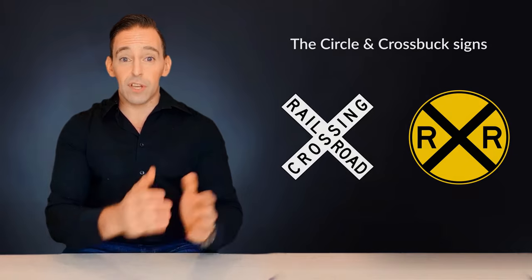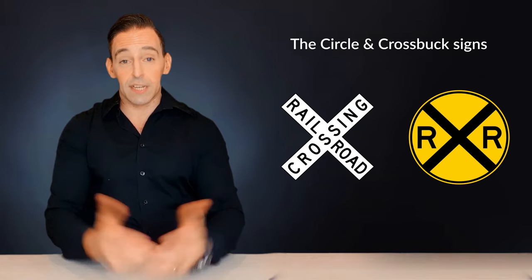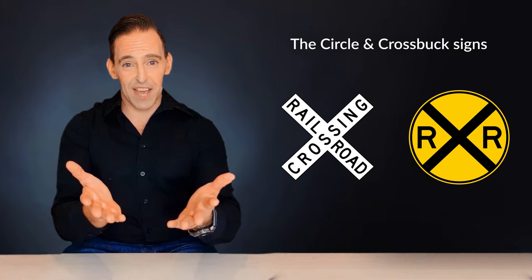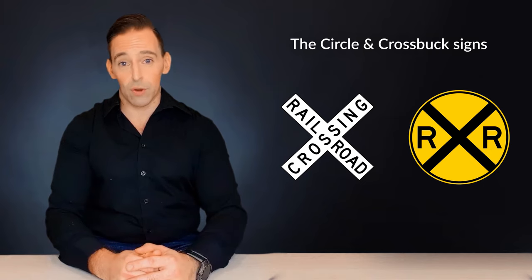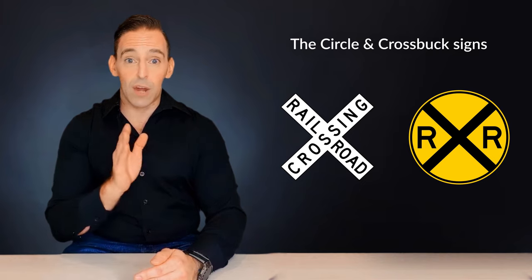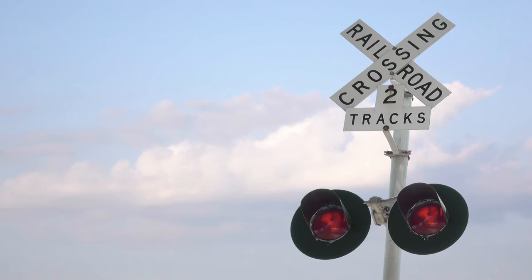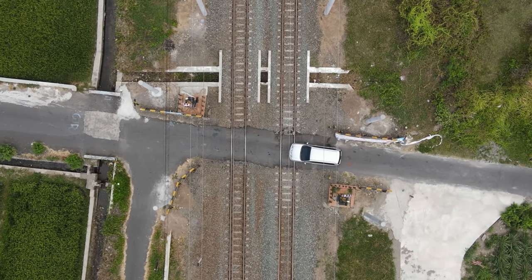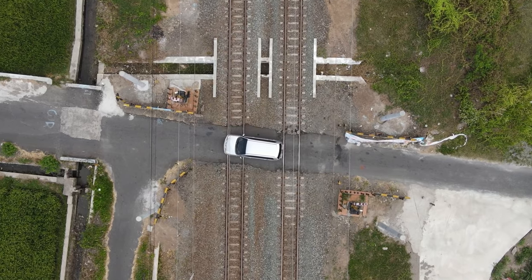Then we have the circle and crossbar, which actually indicates the same thing. Can you guess? That's right, a railroad crossing. Railroad crossing signs are hard to miss. They are often circle or crossbar and read the words railroad crossing in large letters. Before crossing the tracks, be sure to look both ways to avoid being struck by an oncoming train.